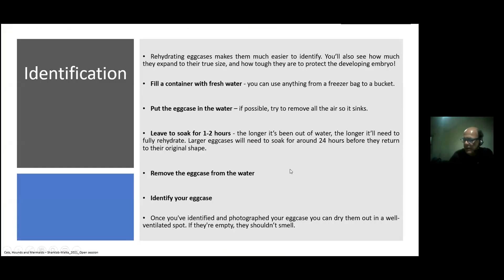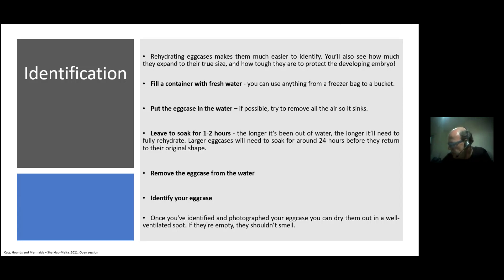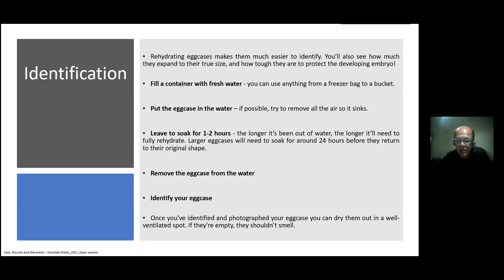Sometimes when egg cases go to the back of the beach they become dry, crispy, and very deformed, making it difficult to identify exactly which species they belong to — bearing in mind that egg cases are very specific in their shape, designed with heels, horns, tendrils or no tendrils based on the individual species. As they dry they shrink and contract. However, there is a very simple method to rehydrate the egg case and accurately identify it.